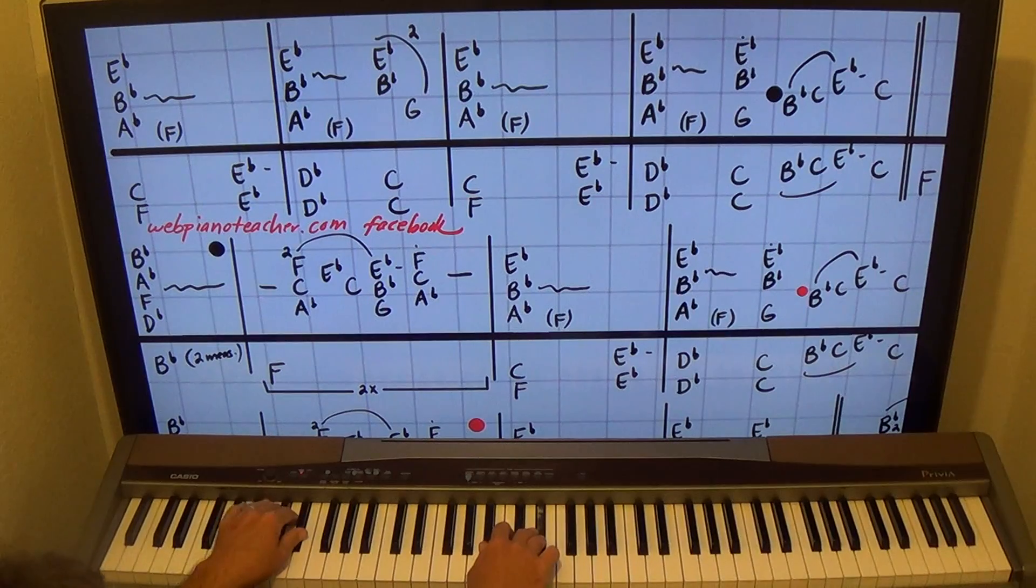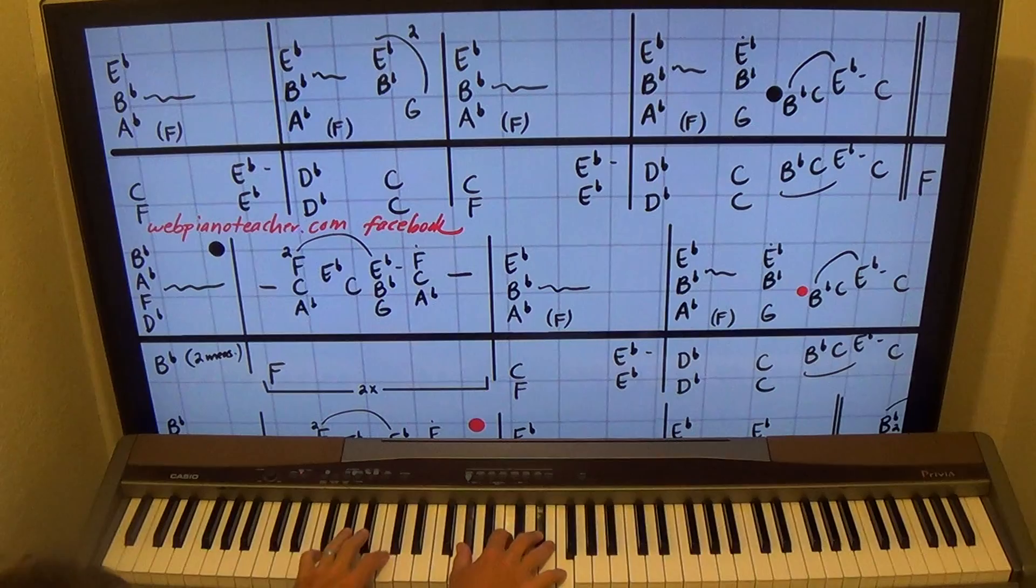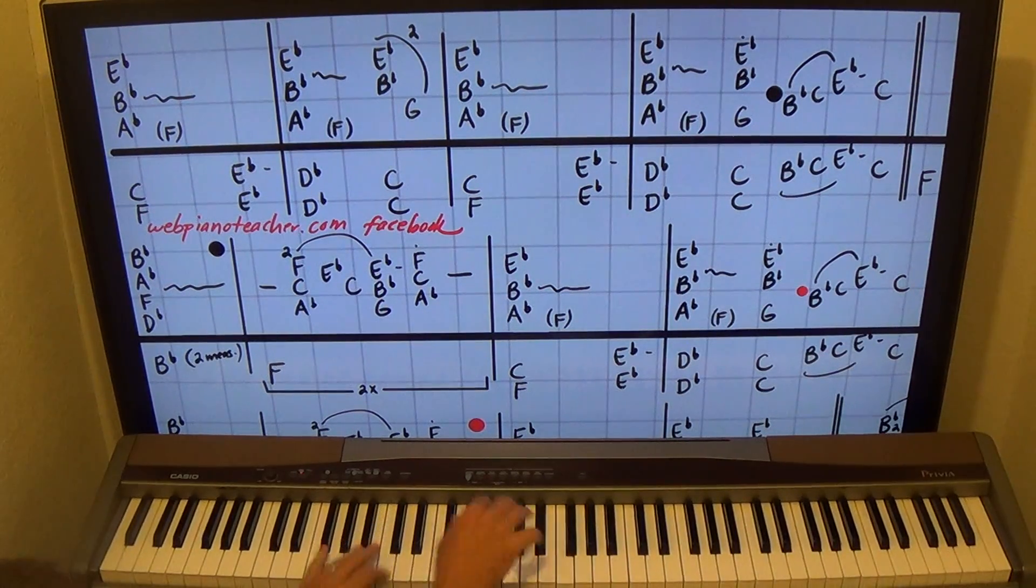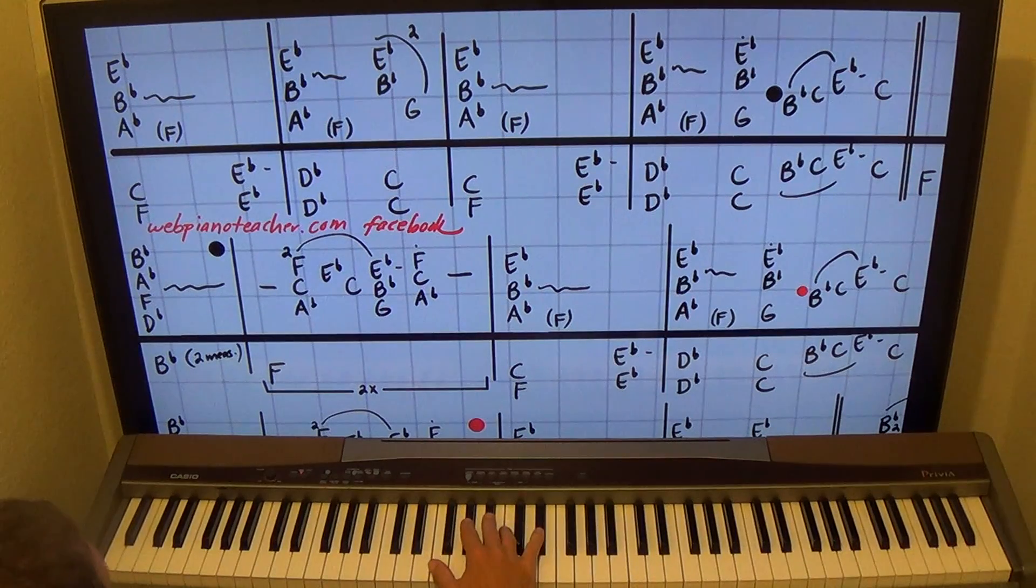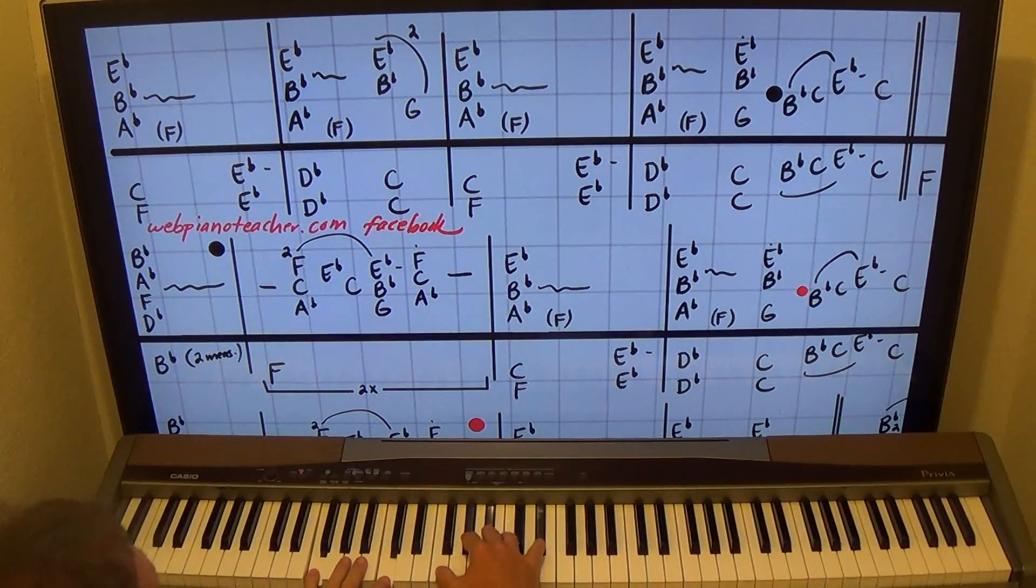B-flat, C, E-flat, C, two. And then we'll get to that next part. I'll show you how to do that rhythmic. D-dup, D-dup, D-dup, D-dup, D-dup, D-dup, D-dup. A little funky rhythm there. But let's go from the beginning. Ready? And go. One, two, three.